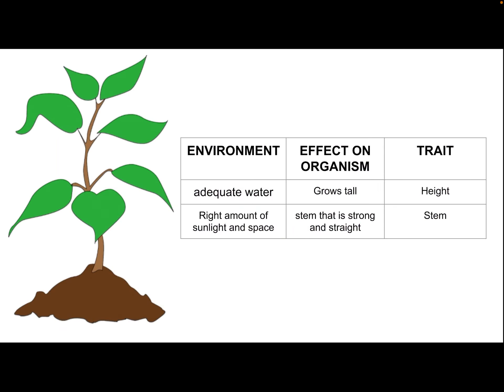Let's talk about plants now. Look at this plant — I know this is just a cartoon version, but it represents one that has received adequate water, meaning just enough water to survive. We know that with adequate water it will grow tall, and that relates to the physical trait of height. If it also gets the right amount of sunlight and space, the stem will be really strong and straight. When the plant has plenty of room to grow, it doesn't need to be crooked.